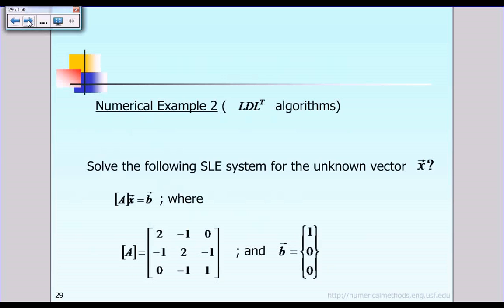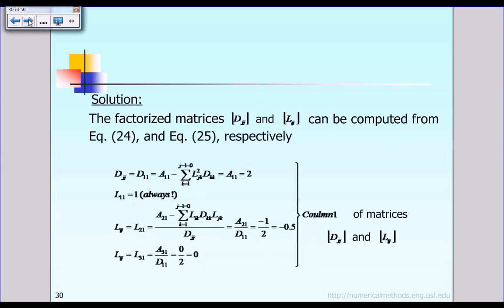Let's go over a numerical example using the original equation Ax equals B, where A and vector B are the same as before and we want to solve for unknown vector X. According to the procedure, step one is to find the diagonal matrix D and the lower triangular matrix L, based on the equations derived earlier.